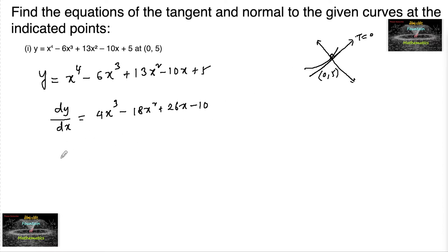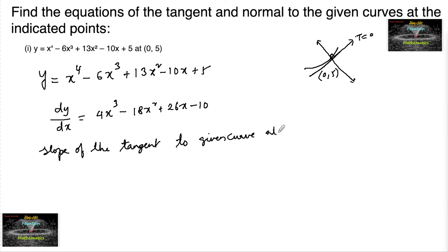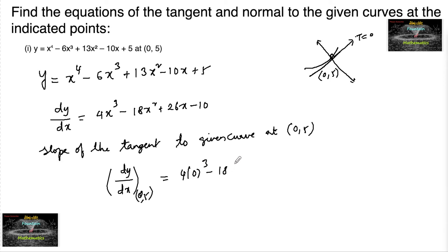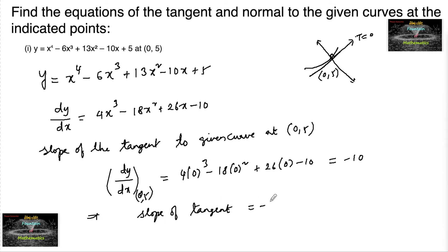Now at a point, the slope of the tangent to the given curve at point (0, 5) is equal to dy/dx evaluated at x = 0, y = 5. Substituting: 4(0)³ - 18(0)² + 26(0) - 10 = -10. Hence, the slope of the tangent is equal to -10.